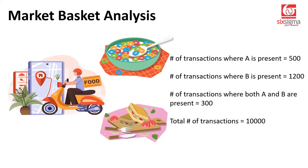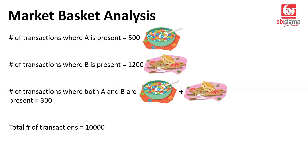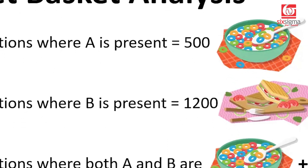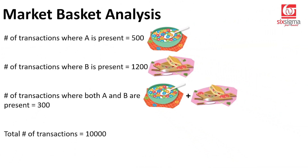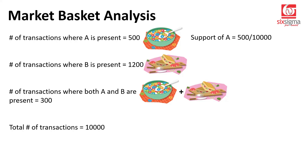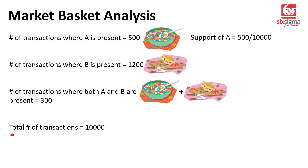Now we will begin to talk about it in slightly different terms. Here's the information we have so far: the number of transactions where A is present, where B is present, where A and B both are present, and the total number of transactions. There's a term called support of A. By definition, support of A is the number of transactions where A is present divided by the total number of transactions — so that will be 500 divided by 10,000.